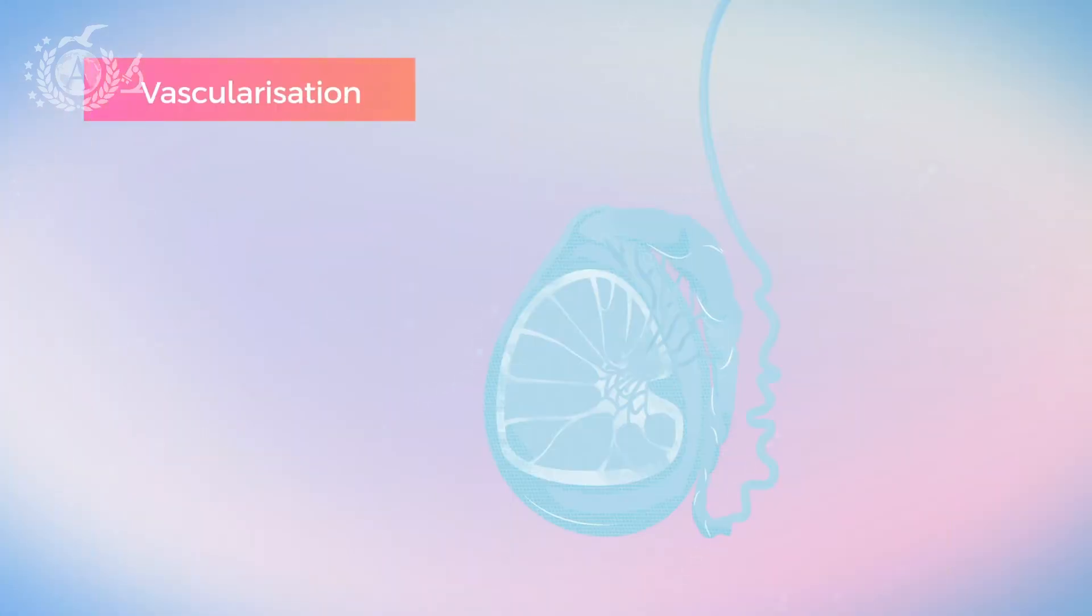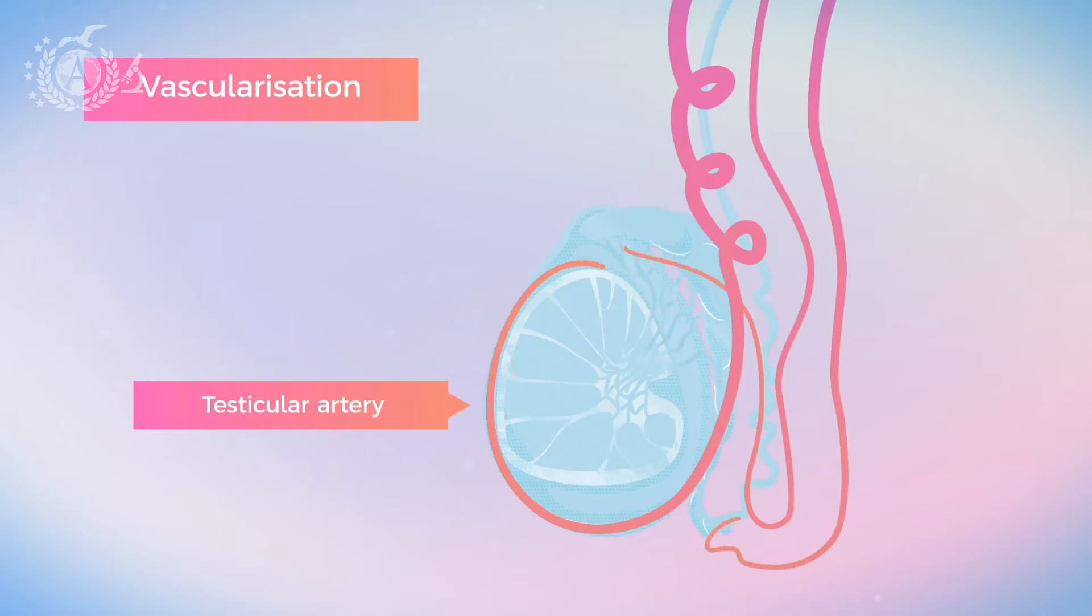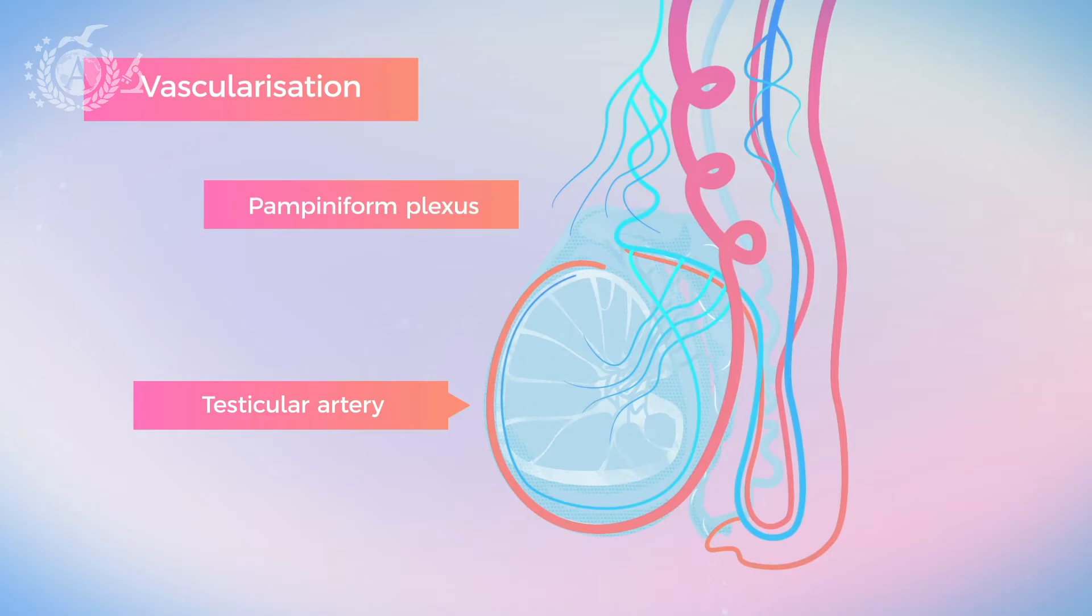From a vascular point of view, the testis is supplied by a dense arterial network, whose main branch is the testicular artery. This branches off from the descending abdominal aorta, at the level of L2, and runs retroperitoneally through the abdomen until it enters the inguinal canal. Instead, the venous part is made up of a complex of veins that ascend along the spermatic funiculus and anastomose to form an important venous complex, the pampiniform plexus. This directs all the blood drain from the testicle into the testicular vein and, therefore, into the inferior vena cava.